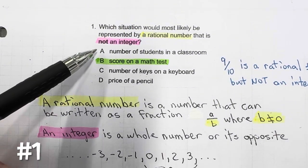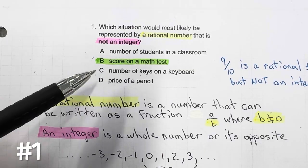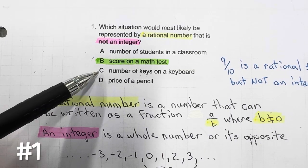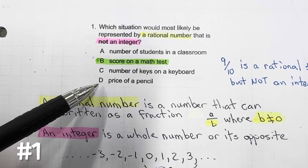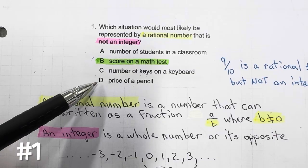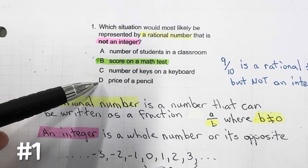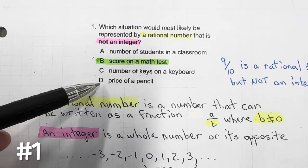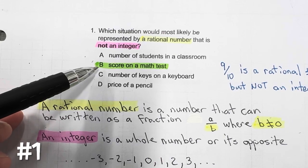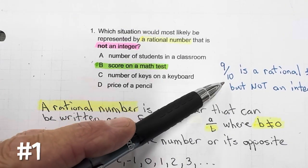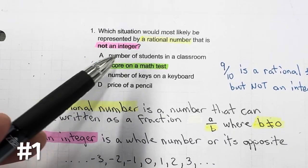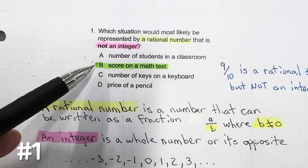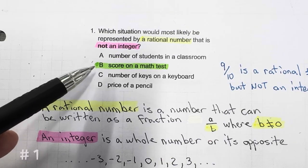The number of students in a classroom can only be whole numbers. Numbers of keys on a keyboard — again, only whole numbers. Price of a pencil could be a whole number like $1, but most likely it's something like $0.53. But if you look at B — score on a math test — like 9 out of 10. Most likely it's going to be a rational number: 1 out of 10, 2 out of 10, 3 out of 10, and so forth.